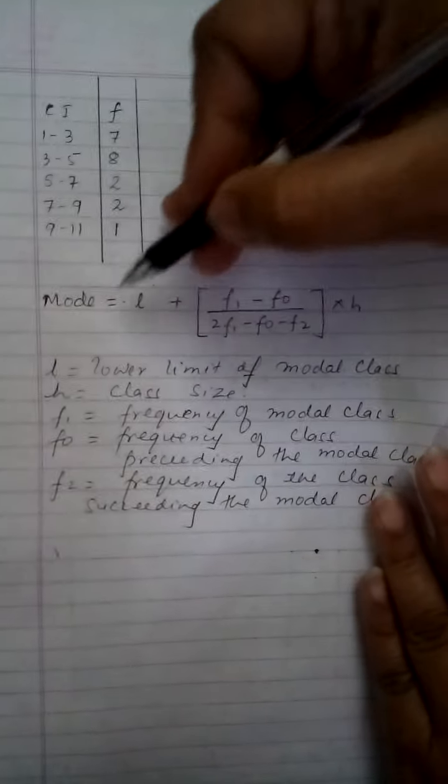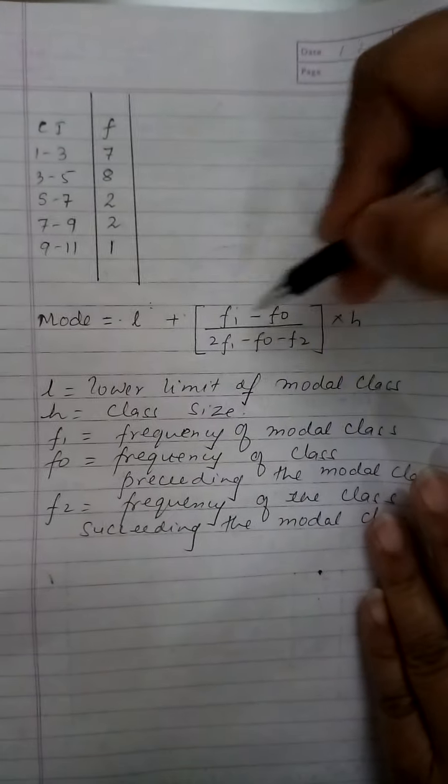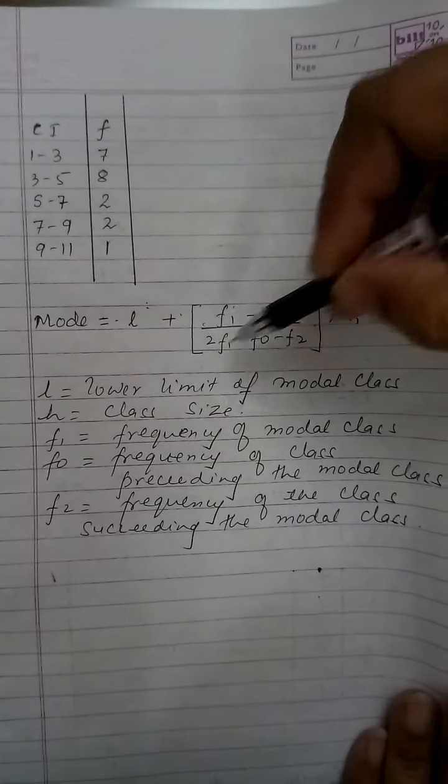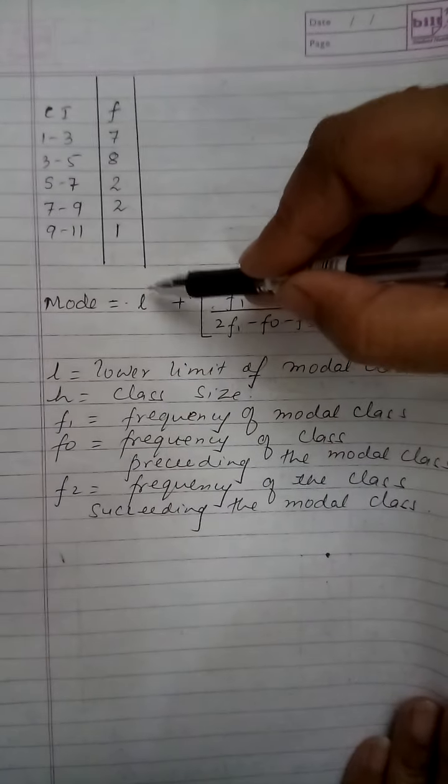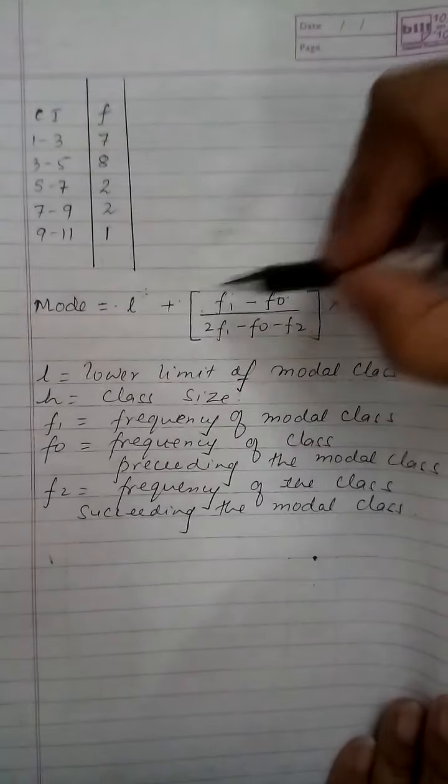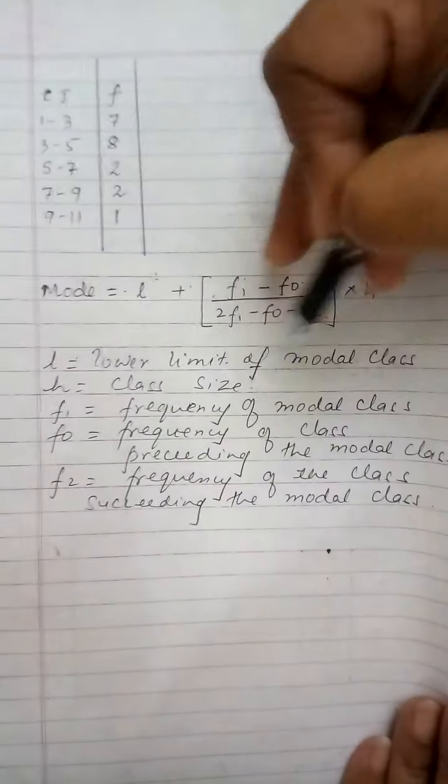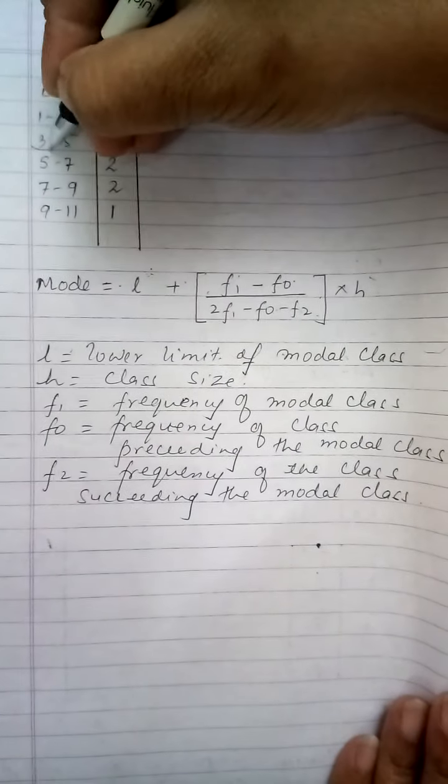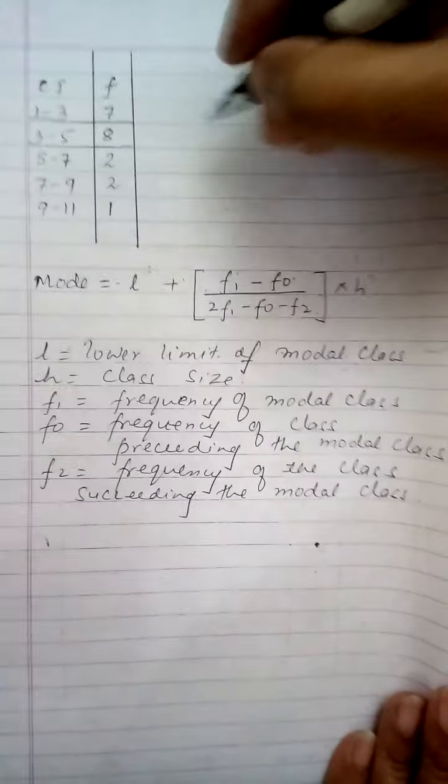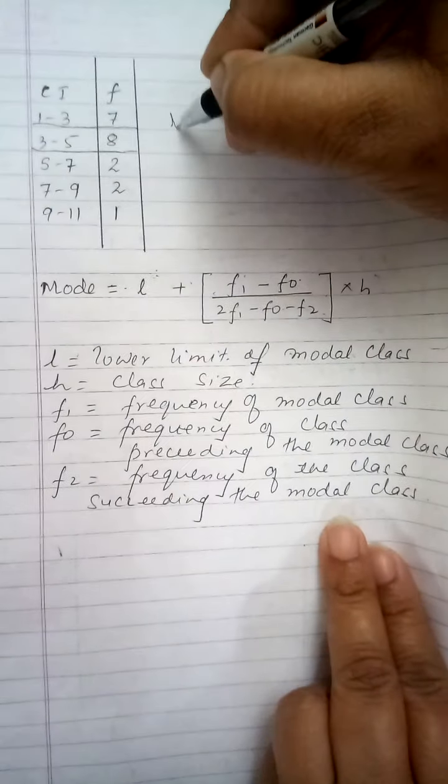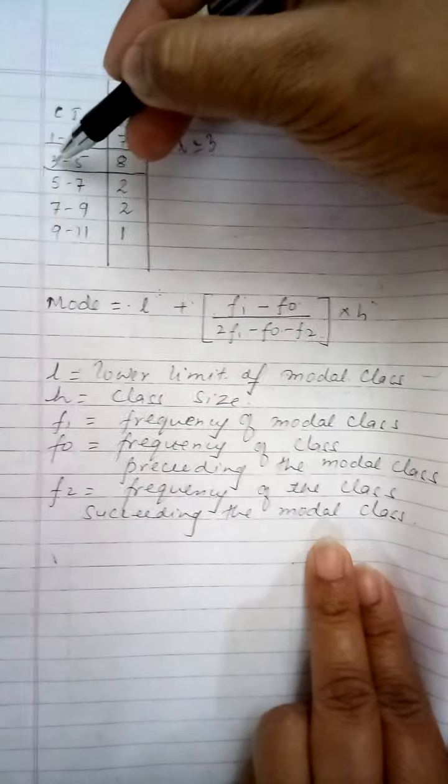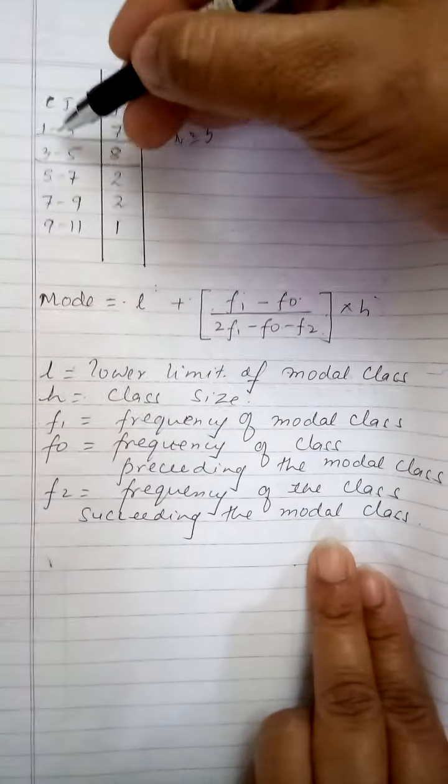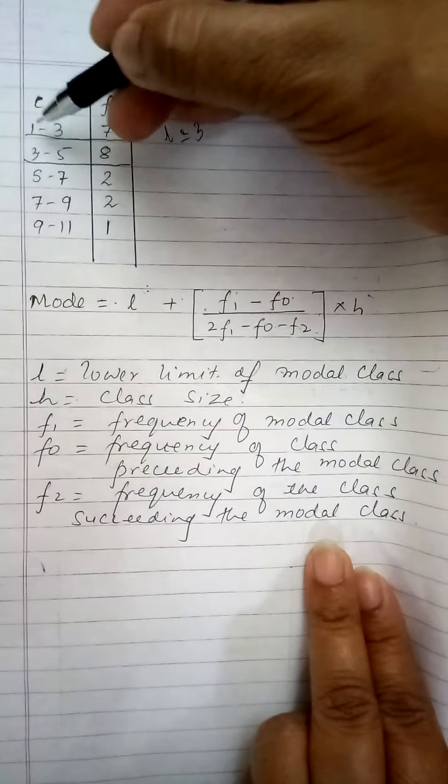So now moving on further on how to find the mode, here I have again drawn the table and I have written the formula for mode as l plus f1 minus f0 whole divided by 2f1 minus f0 minus f2, the entire thing multiplied by h. This l is separate, it is not a part of this second part. Now what do these values denote over here? l is the lower limit of the modal class. My modal class was 3 to 5 right, so l becomes 3. h is the class size. The class size as told earlier also you find it out by upper limit minus lower limit. So 3 minus 1 gives me 2 so the h becomes 2.